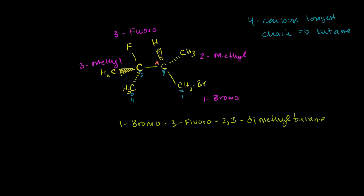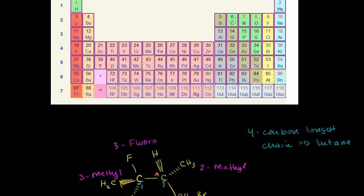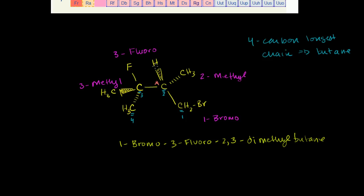That's the standard nomenclature. We still haven't used the RS system — now we can do that. We already identified the chiral center, so we just have to rank the groups attached to it in order of atomic number using the Cahn-Ingold-Prelog rules. This chiral carbon has three carbons and one hydrogen attached. Carbon has atomic number six; hydrogen has atomic number one. So hydrogen is definitely number four — the lowest priority group.